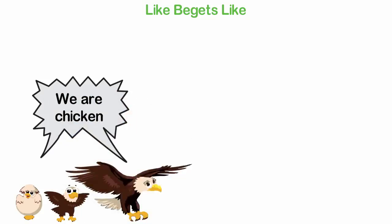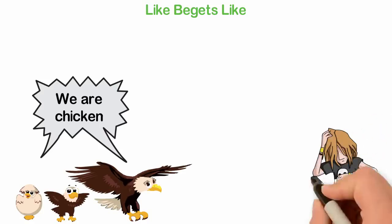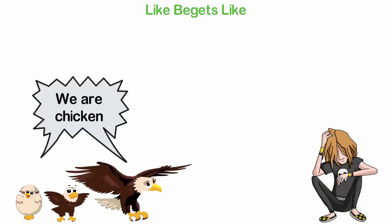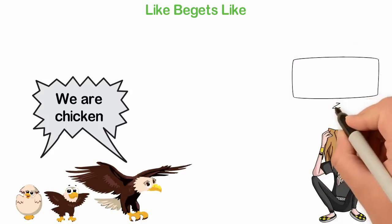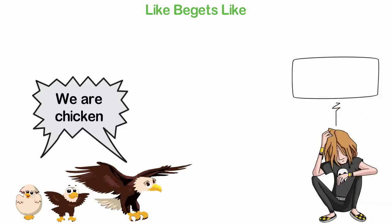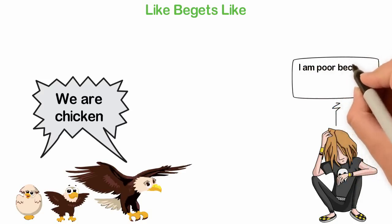Like those eagles, like always begets like, even amongst human beings. So what happens in poor countries is that when you're 7 years old, you'll notice that everyone around you is poor, and not just that these people are poor, they always blame someone else for their poverty. At age 7, you may not understand these people, but by the time you're 17, you're already successfully initiated into their evil world.